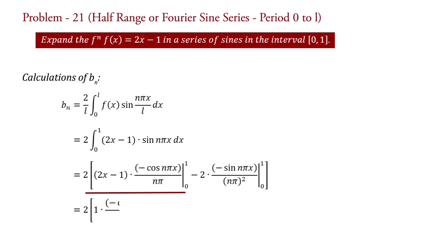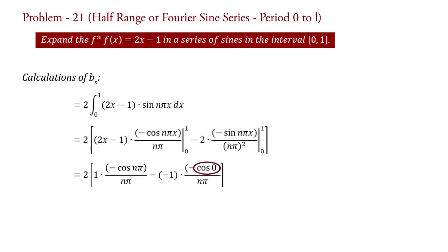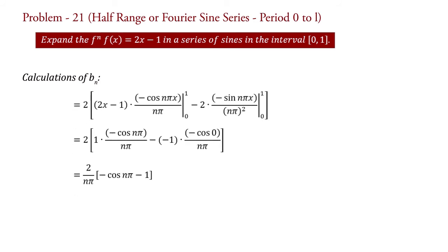And hence, putting the value of limit in this term, we get bn = 2[1·(-cos(nπ)/nπ) - (-1)·(-cos(0)/nπ)]. Since cos(0) = 1, taking 1/nπ common, therefore bn = (2/nπ)[-cos(nπ) - 1]. Therefore, this is equal to -(2/π)·(cos(nπ) + 1)/n.